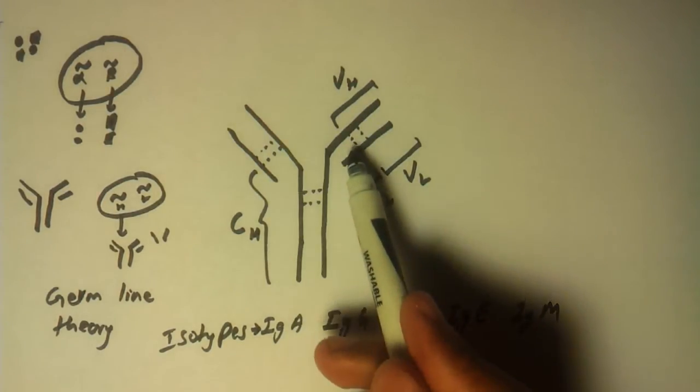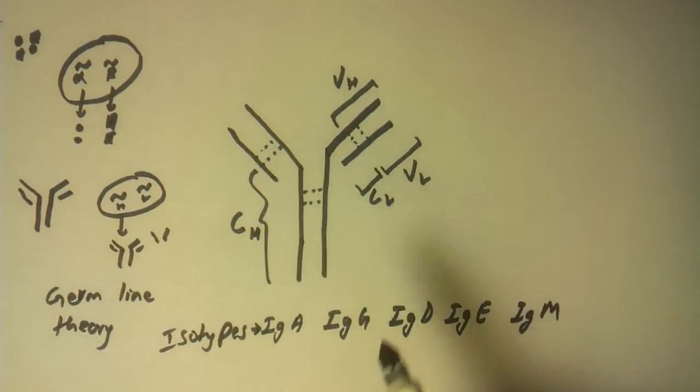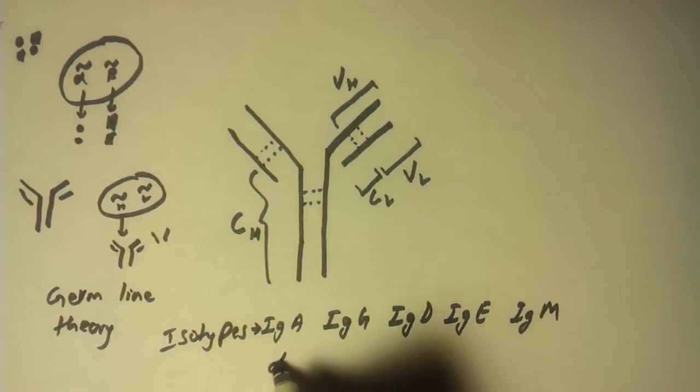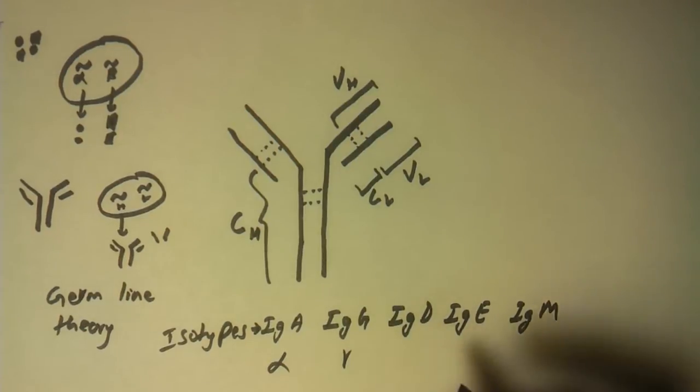These different isotypes differ in their constant region of their heavy chain. So if an antibody has the constant region alpha, it is called IgA. If it has constant region gamma of heavy chain, it's called IgG. If it's delta, IgD. If it's epsilon, IgE. And if it's mu, it's called IgM.